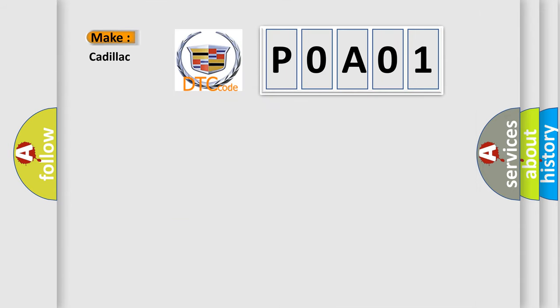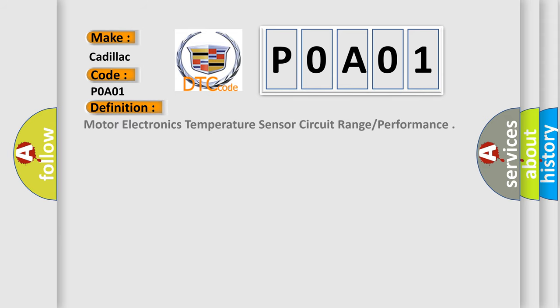So, what does the Diagnostic Trouble Code P0A01 interpret specifically for Cadillac car manufacturers? The basic definition is motor electronics temperature sensor circuit range or performance.